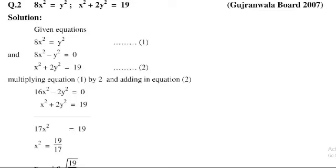Multiplying equation 1 by 2 and adding to equation 2: 16x² − 2y² = 0, plus x² + 2y² = 19. The 2y² terms cancel, and 16 + 1 = 17, giving 17x² = 19.